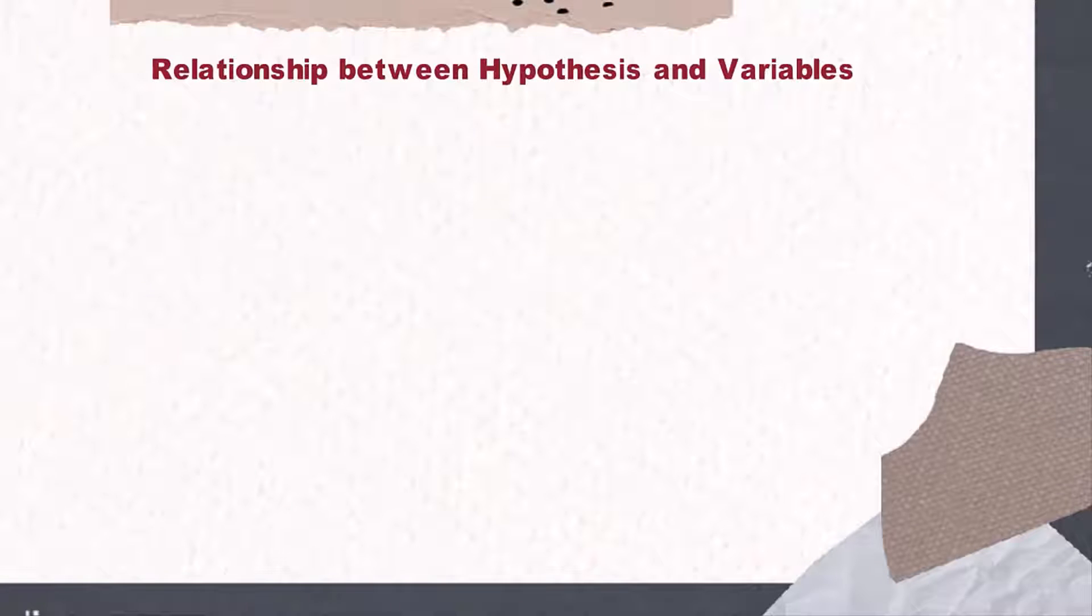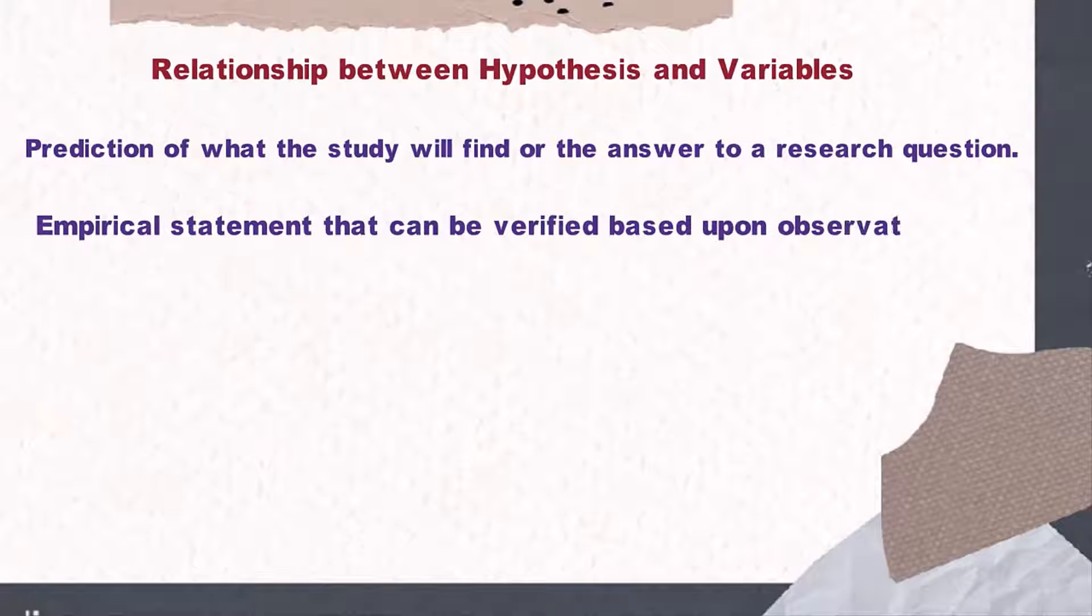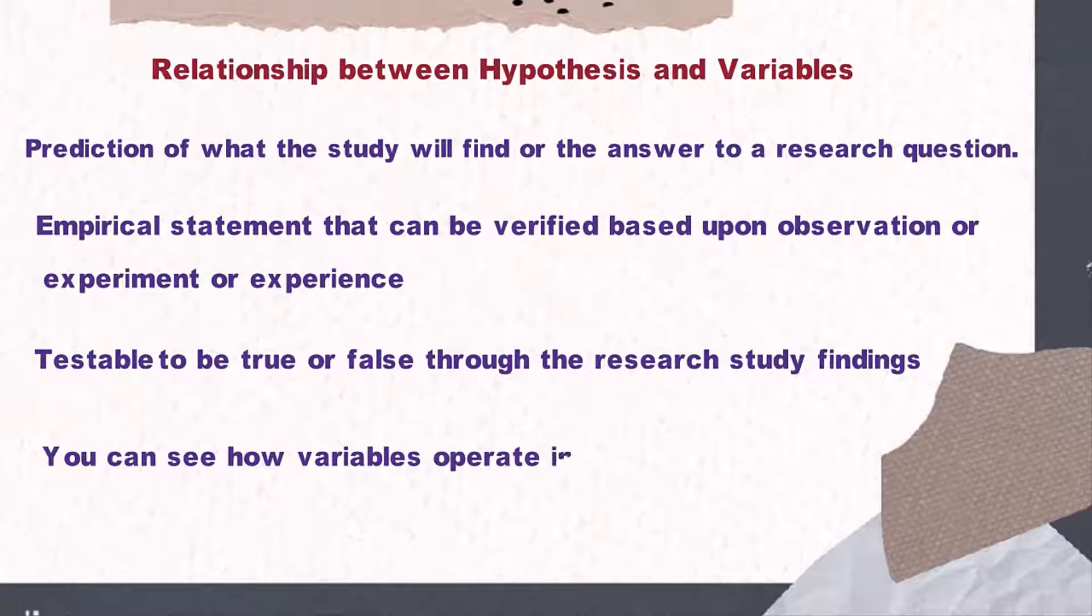Relationship between hypothesis and variables: A hypothesis is a prediction of what the study will find or the answer to a research question. A hypothesis is an empirical statement that can be verified based upon observation, experiment, or experience. A hypothesis is testable to be true or false through the research study findings. Variables are found in the hypothesis or research question. In a hypothesis, you can see how variables operate in a research study.